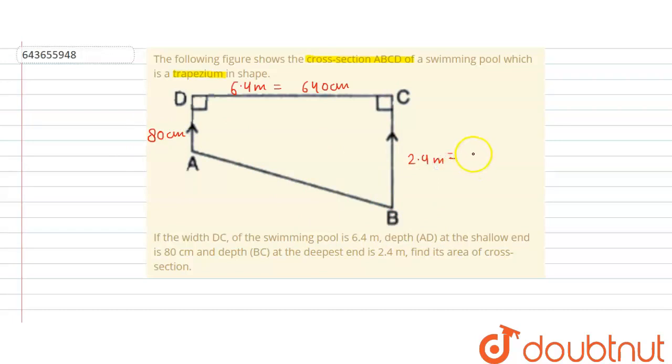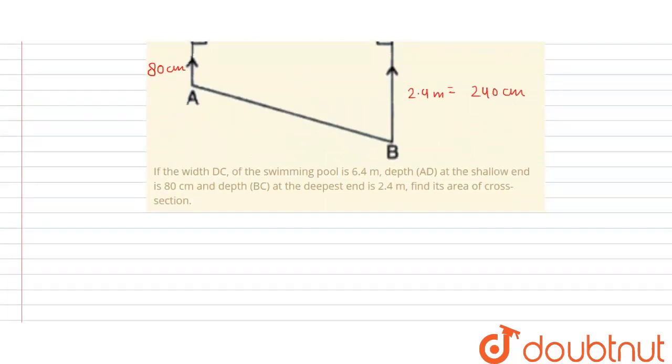Then find the area of this cross-section. So area of cross-section, meaning is here we write area of cross-section. The cross-section is in the shape of trapezium.